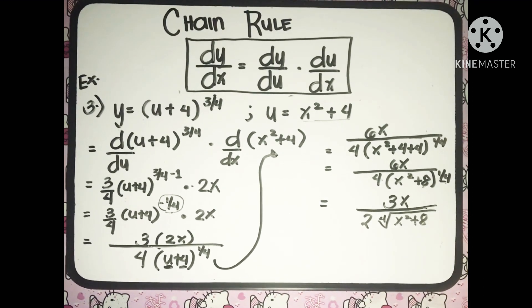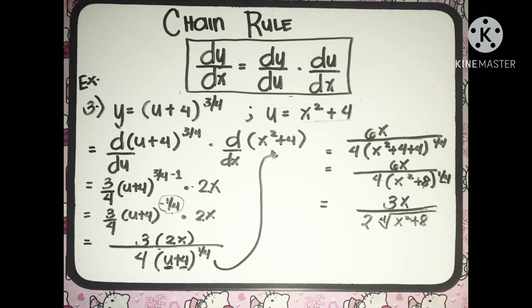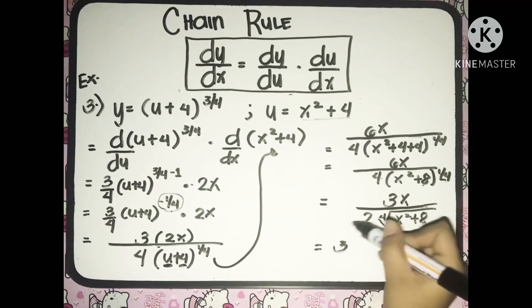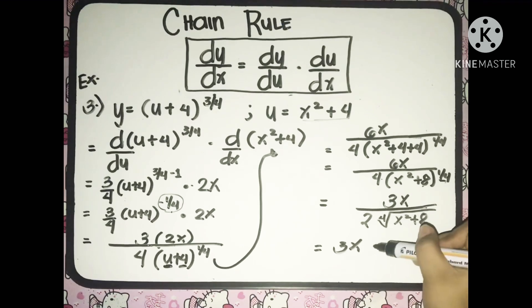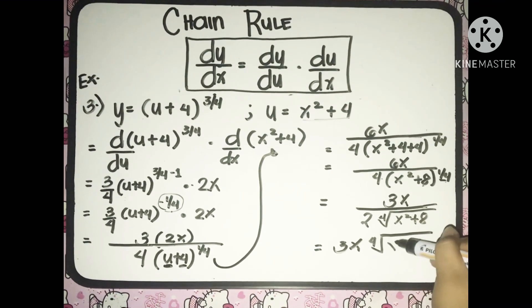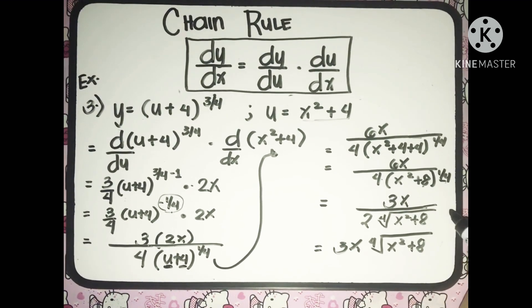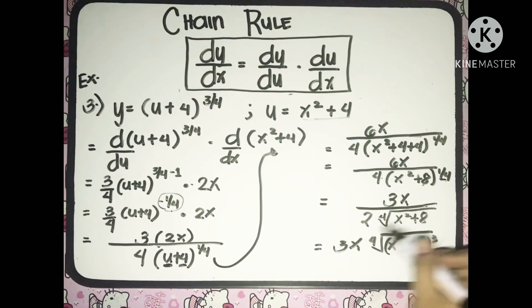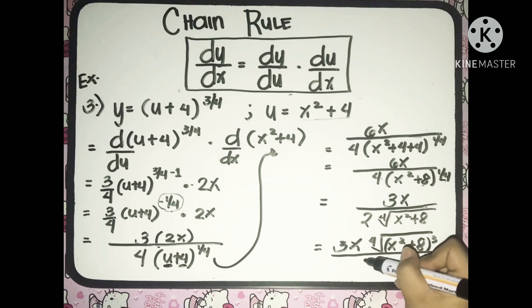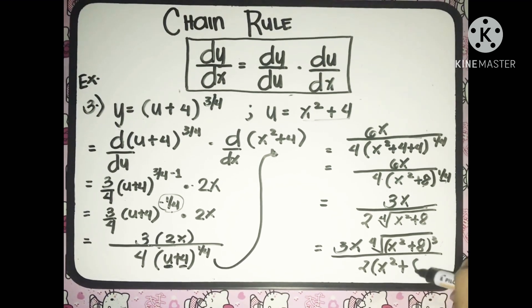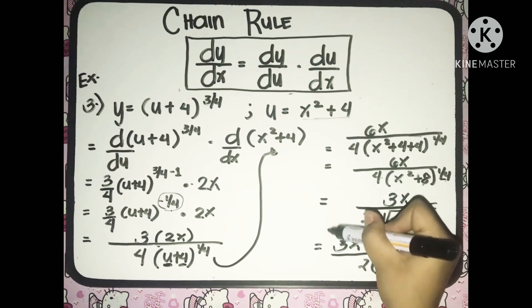Then by rationalizing, we would have 3x multiplied to the fourth root of x squared plus 8. And that is the final answer.